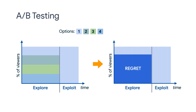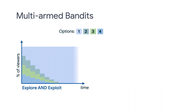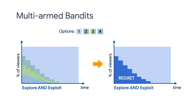One thing to note is regret, which is the difference between what you actually get and the optimal reward. So in this A/B test example, the regret does not improve in the exploration phase until you go into the exploitation phase. But if you are using an MAB algorithm to do exploration and exploitation at the same time, the regret gradually decreases because you are gathering more information about the rewards of the four options, which helps you pick the best one along the way. So this is a much more effective approach.